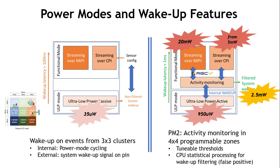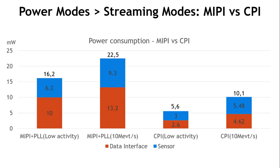Activity detected in always-on mode can wake up the chip itself to higher power modes or produce wake-up signals to start the processing platform. Higher power modes activate the CPU for more sophisticated data statistics and progressively enable full streaming via the parallel or MIPI interface. Power consumption reaches single-digit milliwatts for the parallel interface and about 20-plus milliwatts for MIPI — whose interface overhead actually dominates total sensor power consumption, making the parallel interface preferable for truly embedded edge vision applications.